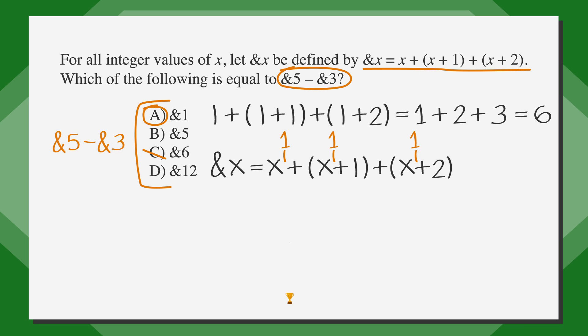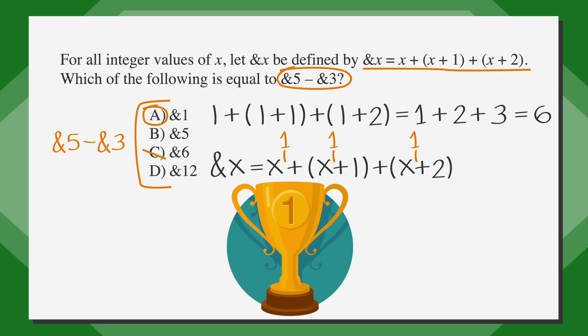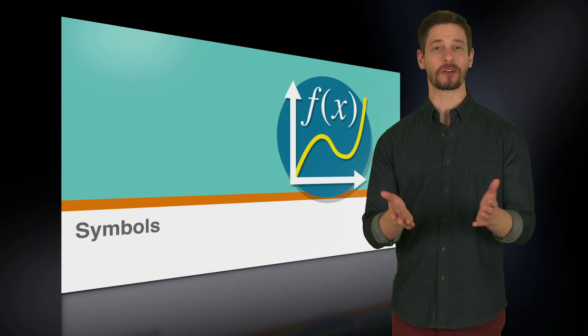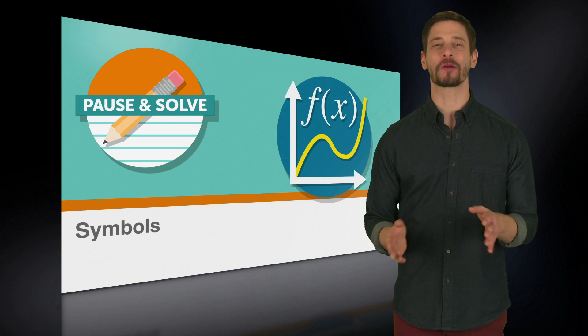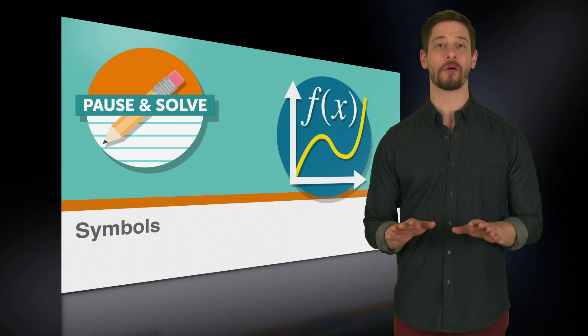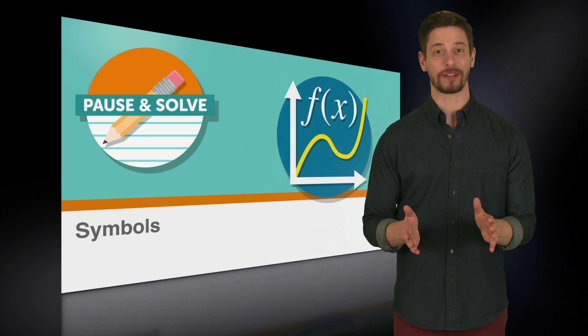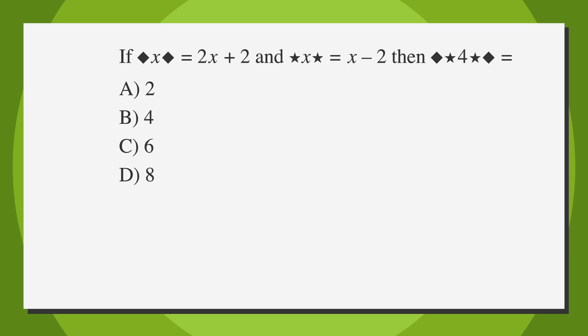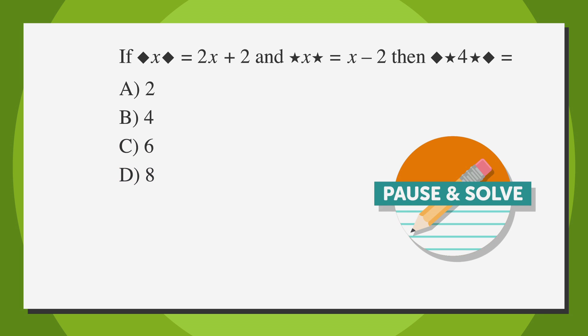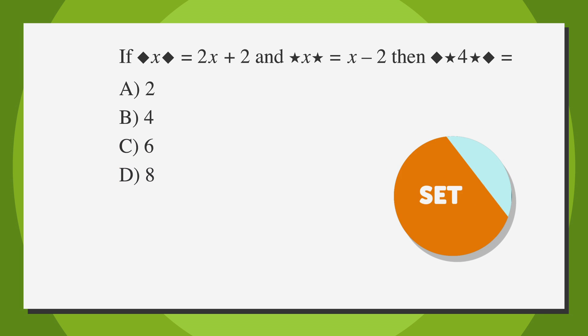Let's give ourselves a small symbol of victory for sticking it out through that solve. Great work! Now seems like a good time to do a pause and solve. Grab some paper and a pencil. When I say pause, you'll pause this video and solve the problem. When you unpause the video, we'll go over it together. Here's the question: if diamond-x-diamond equals 2x plus 2 and star-x-star equals x minus 2, then diamond-(star-4-star)-diamond equals A) 2, B) 4, C) 6, or D) 8. Ready, set, pause.